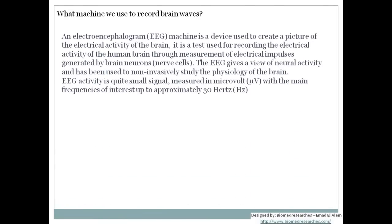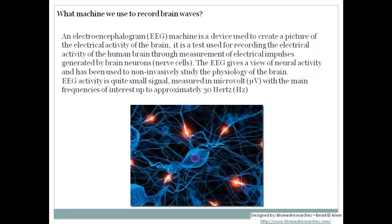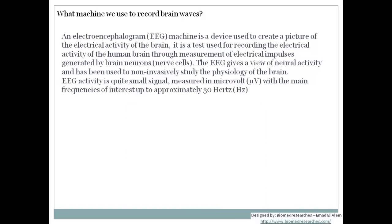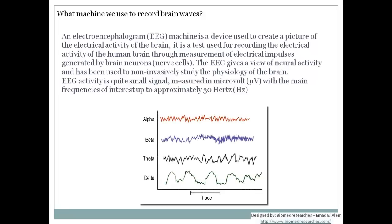We will start by introducing the EEG machine. The electroencephalogram or EEG machine is a device used to create a picture of the electrical activity of the brain. The test obtains a recording of the electrical activity of the human brain through measurement of the electrical impulses created by neurons or nerve cells, which communicate with each other by creating these impulses. By doing the EEG, we are viewing the neural activity.